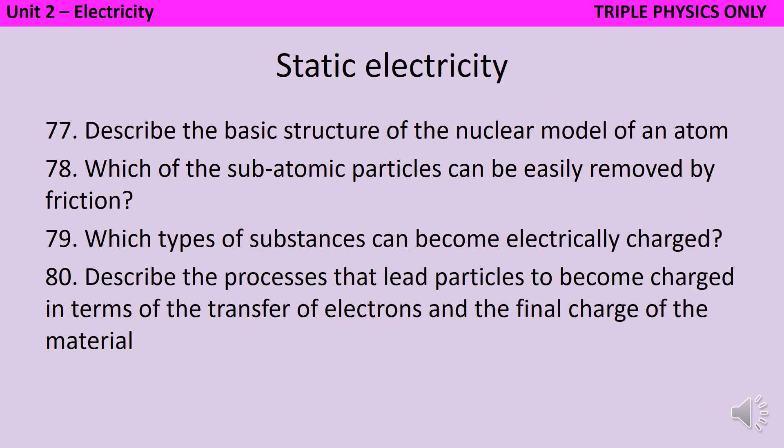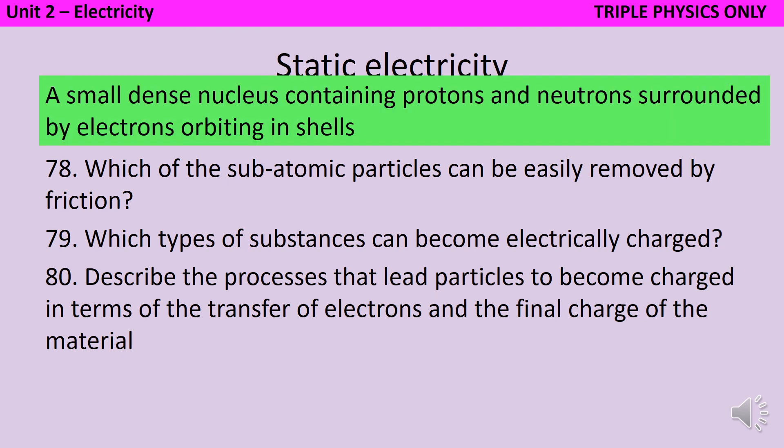The Bohr model or nuclear model of the atom consists of a small dense nucleus with protons and neutrons surrounded by electrons orbiting in shells, and then most of that atom is actually empty space. Those small, very light electrons can be removed by friction, but this only leads to substances becoming electrically charged when they are electrical insulators. If you think about something like a metal, you could lose a few electrons, but then other electrons would just move to take their place, and so overall it's very hard for a charge to build up. When two substances are rubbed on one another, electrons are transferred from one to the other. And the one that gains the electrons becomes negatively charged, and the one that loses the electrons becomes positively charged.